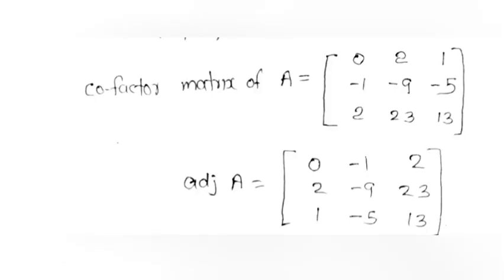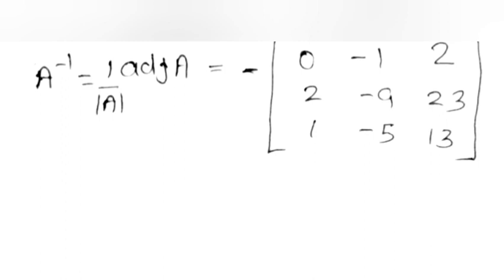Cofactor matrix of A = [[0,2,1],[−1,−9,−5],[2,23,13]]. Adjoint of A = [[0,−1,2],[2,−9,23],[1,−5,13]]. A⁻¹ = (1/det A) × adj A = −1 × [[0,−1,2],[2,−9,23],[1,−5,13]].